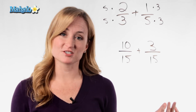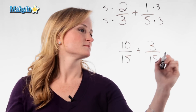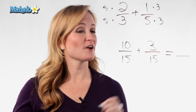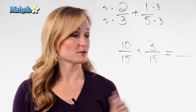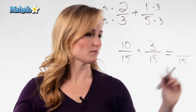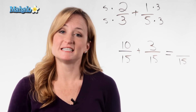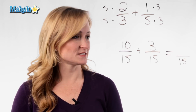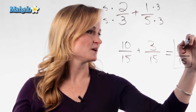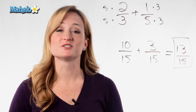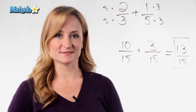Now we have two fractions that actually can be added. In adding fractions, you don't add the denominator — you leave it as is. So it's 15. Now we just need to add the top: 10 plus 3 is 13. So your answer to two-thirds plus one-fifth is 13 over 15.